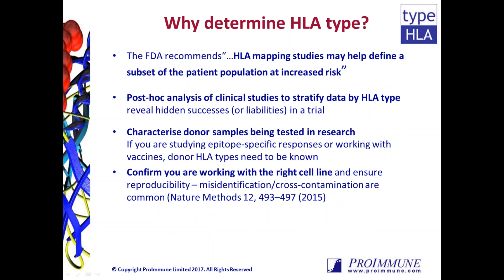Because of these risks, FDA guidelines specifically suggest inclusion of HLA mapping studies in order to help define whether a subset of the patient population is at increased risk. Another benefit of HLA typing is that stratifying trial data may allow you to detect previously undetected successes or potential liabilities in a trial, and this can mean the difference between a novel therapeutic succeeding or failing.